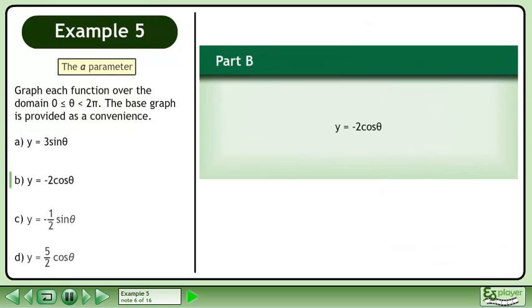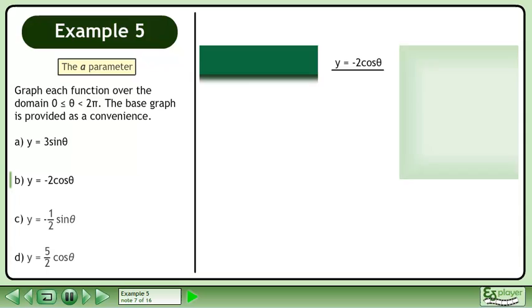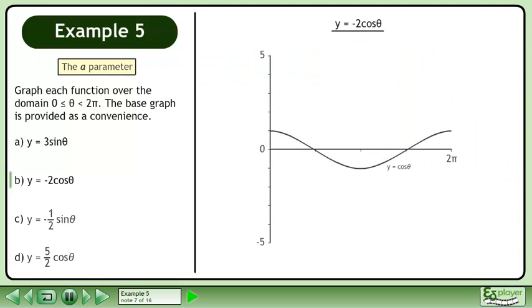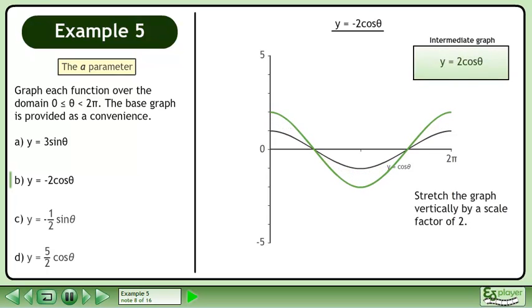In part B, draw the graph of y equals negative 2 cos θ. Let's bring up the graph of y equals cos θ. Stretch the graph vertically by a scale factor of 2. This is the intermediate graph, y equals 2 cos θ.